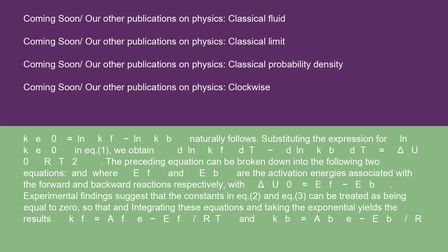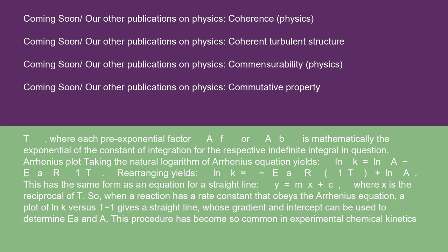Experimental findings suggest that the constants in equation 2 and equation 3 can be treated as being equal to zero, so that in integrating these equations and taking the exponential yields the results Kf equals Af·e^(-Ef/RT) and Kb equals Ab·e^(-Eb/RT), where each pre-exponential factor Af or Ab is mathematically the exponential of the constant of integration for the respective indefinite integral in question.